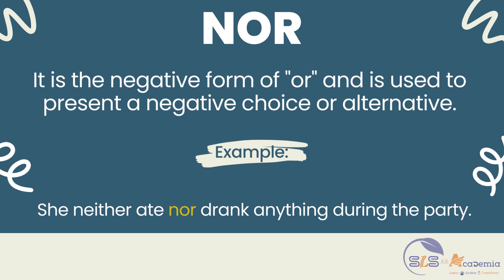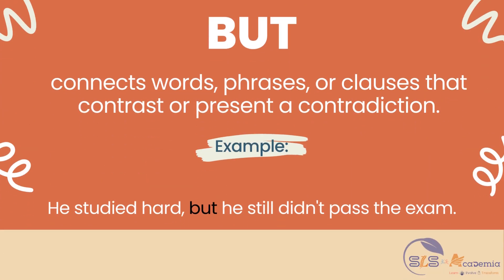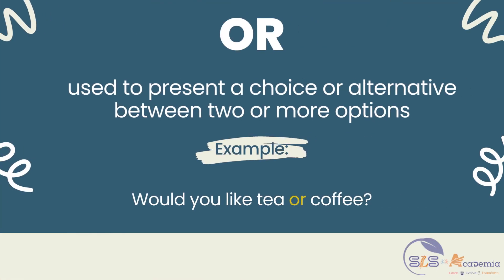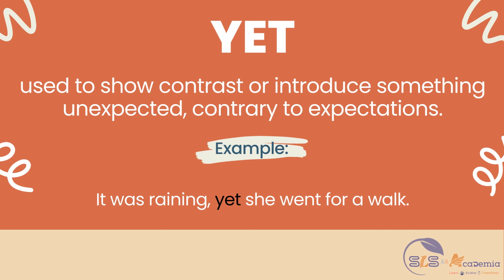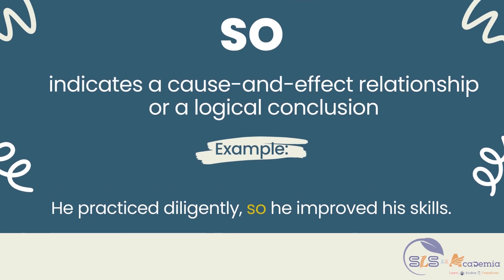"Nor" is the negative form of "or" and is used to present a negative choice or alternative. For example: she neither ate nor drank anything during the party. "But" connects words, phrases, or clauses that contrast or present a contradiction. For example: he studied hard, but he still didn't pass the exam. "Or" is used to present a choice or alternative between two or more options. For example: would you like tea or coffee? "Yet" is used to show contrast or introduce something unexpected, contrary to expectations. For example: it was raining, yet she went for a walk. "So" indicates a cause and effect relationship or a logical conclusion. For example: he practiced diligently, so he improved his skills.